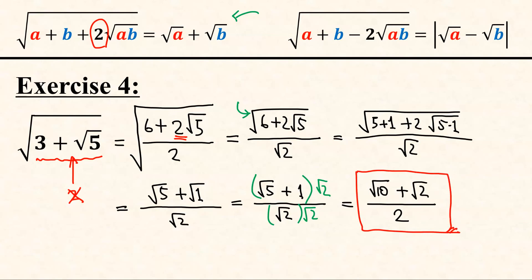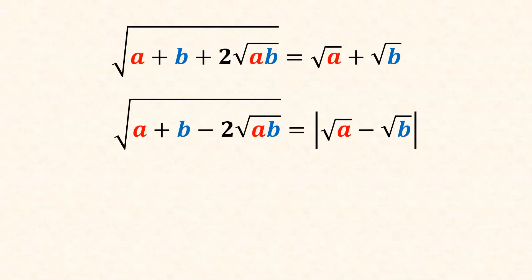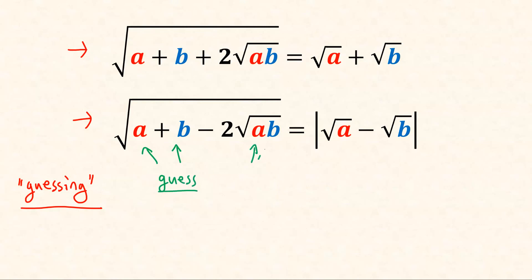That was all the exercises prepared in this video. As mentioned, this method only works for the special cases of these two forms. There is also another catch: this method heavily relies on your ability to guess — that is, your ability to correctly guess the two numbers a and b. However, this guessing process gets very fast when you get used to it. So this is one of the cool tricks to quickly denest some nested radicals, and therefore worth remembering.